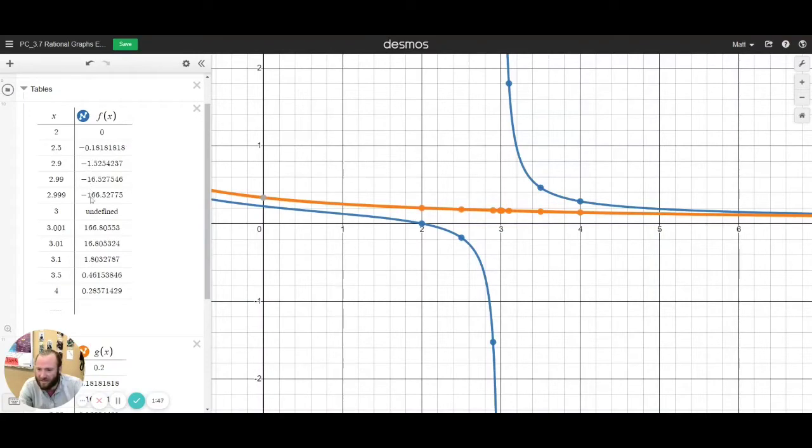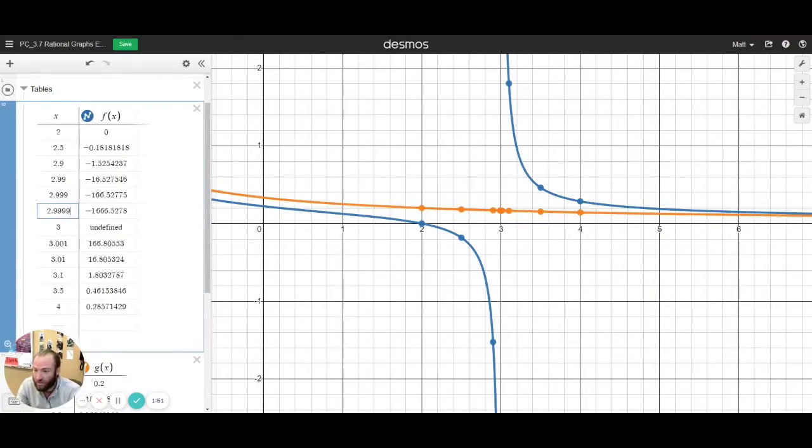negative 166. We could even try going closer to it, and you can see that's growing huge. And if we did the same thing here, 3.0001, it's also growing huge.